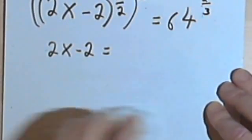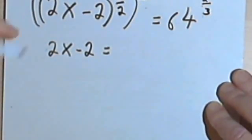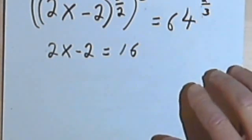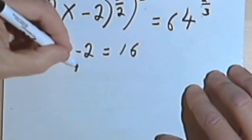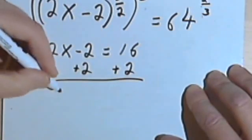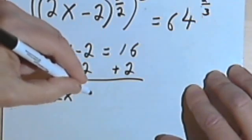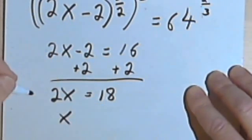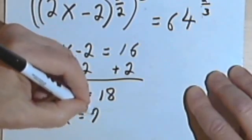Okay, so that means that over here I'm going to have 2x minus 2 equals 16. From here it's a piece of cake. So let's just add 2 to both sides. We're going to get 2x equals 18. So x, I'm dividing both sides by 2, x is going to equal 9.